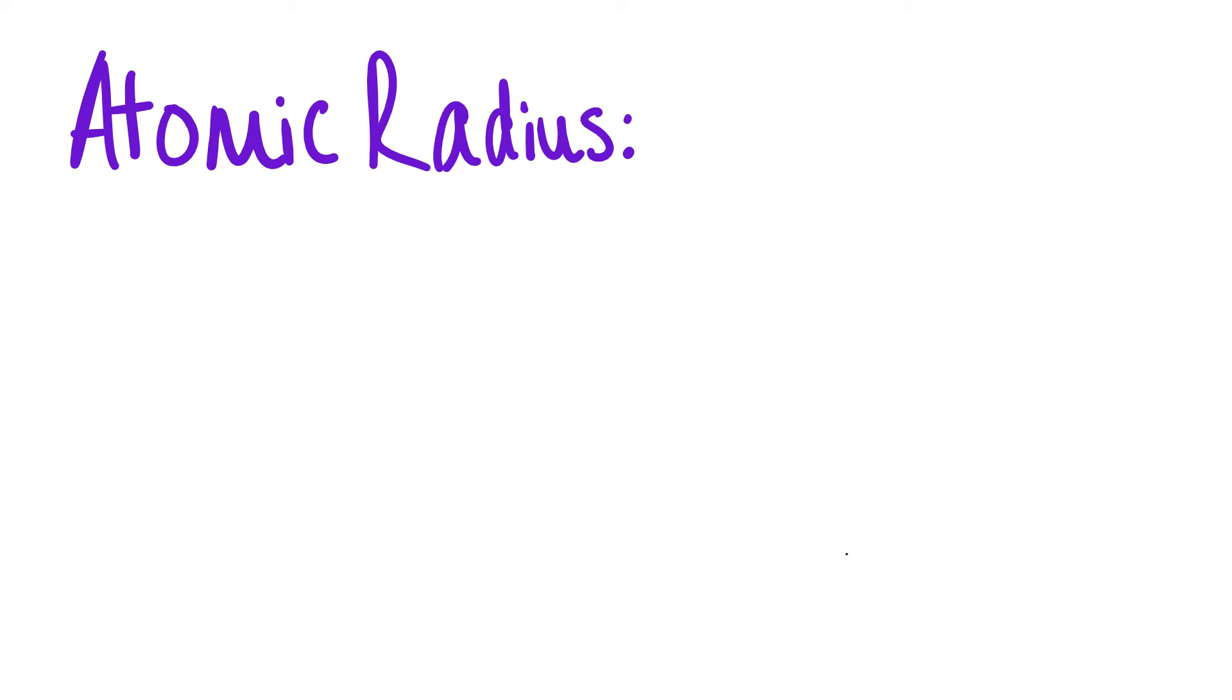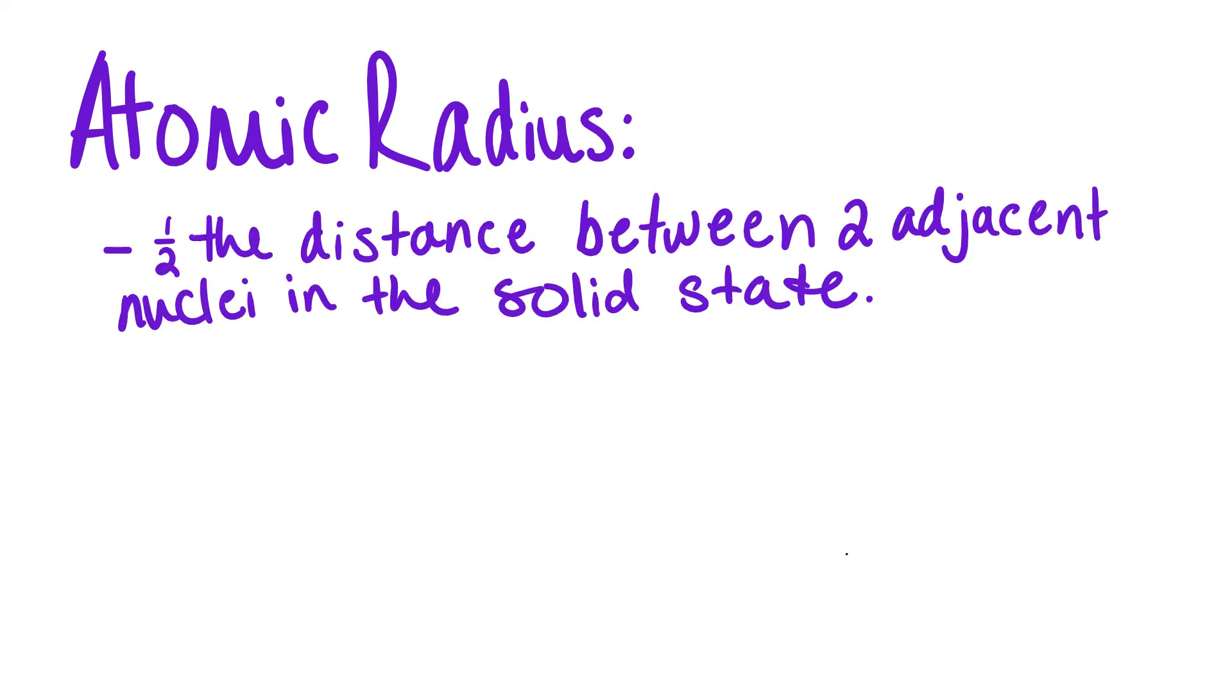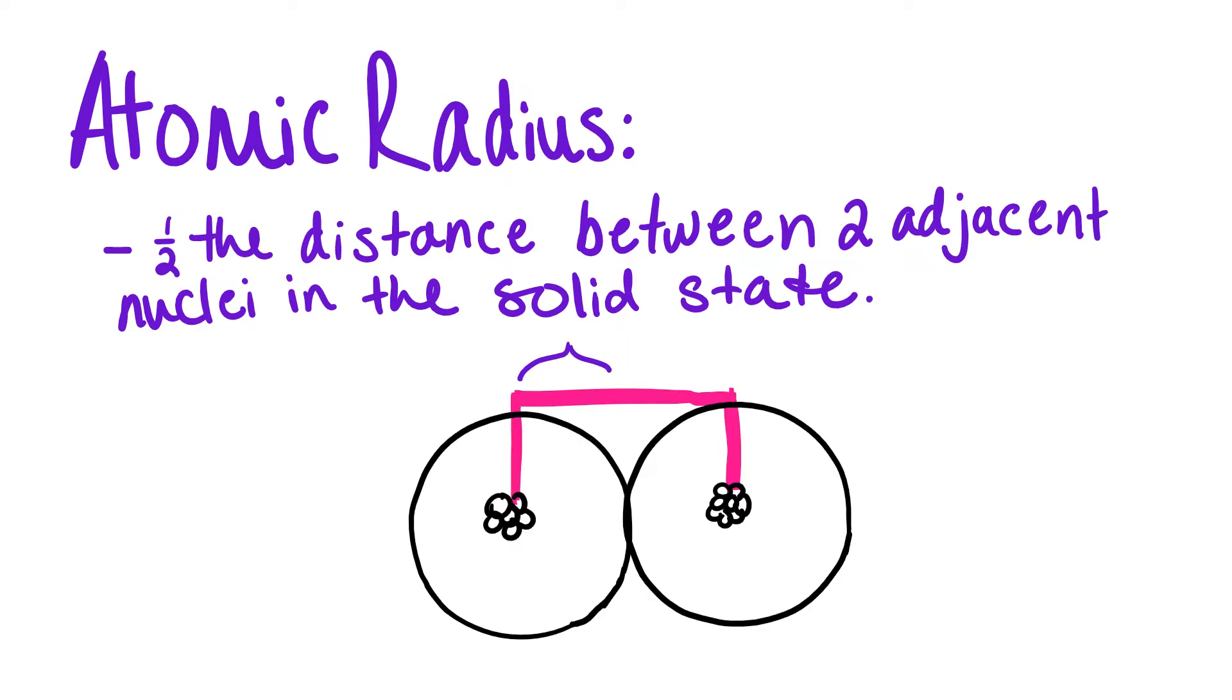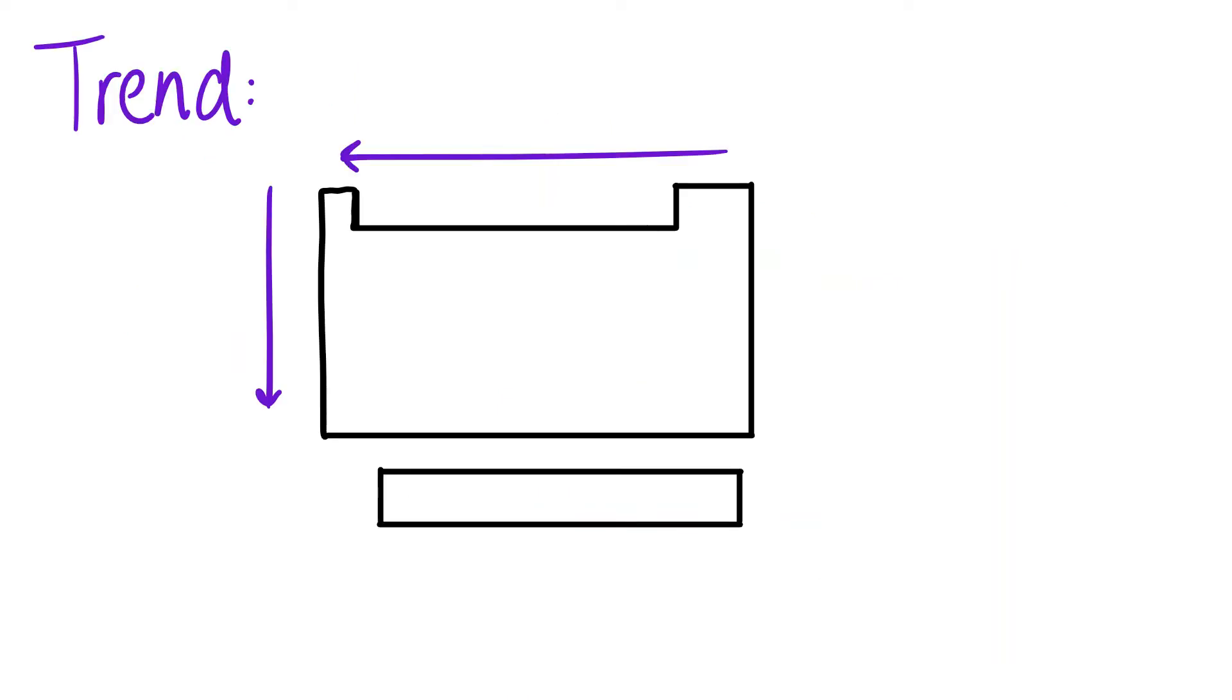We'll start with atomic radius. The atomic radius is half the distance between two adjacent nuclei in the solid state. In this video, I'll be using arrows to indicate the direction in which a characteristic increases. The atomic radius of an element increases from right to left and down on the periodic table.